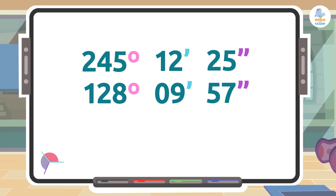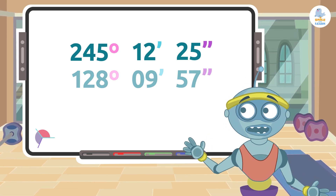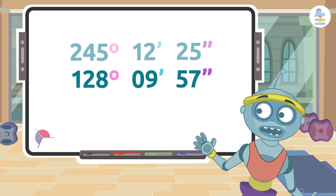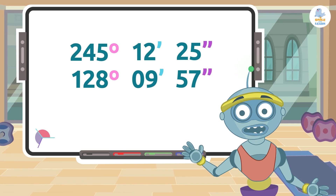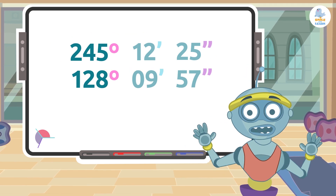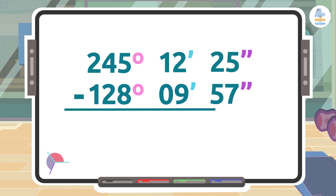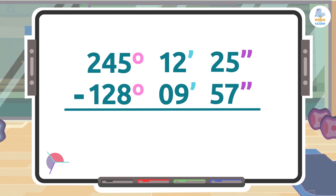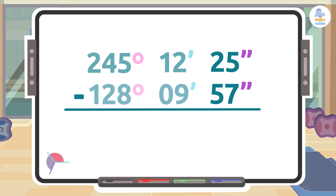The angles we will subtract are: 245 degrees 12 minutes 25 seconds and 128 degrees 9 minutes 57 seconds. The first one goes on top since its degree value is larger. Once we have placed the angles correctly, we subtract the seconds first, then the minutes, and finally the degrees. In the seconds column we see that we have to subtract 57 from 25, and we know that this is not possible.